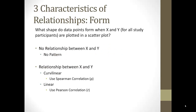First things first, there are three different characteristics of relationships, and correlation is all about helping you understand the relationship between two variables. Form, direction, and strength are the three characteristics of relationships. The first thing I'm going to talk about is form — form is just telling you what shape the data points form when you plot x and y in a scatter plot.